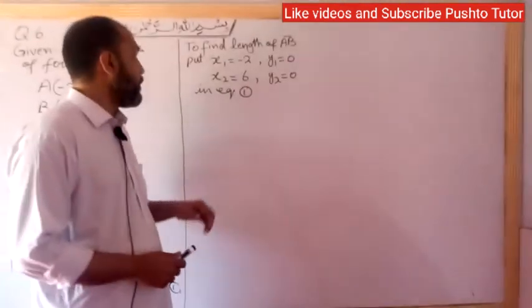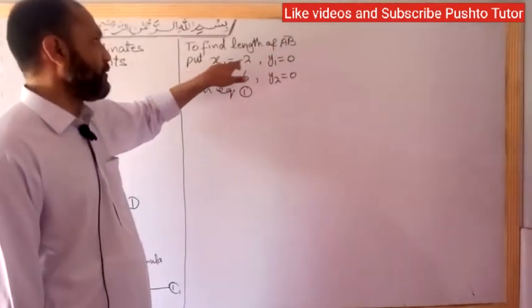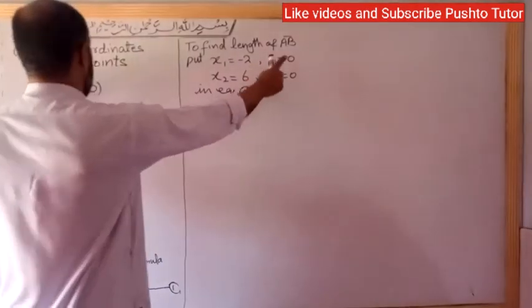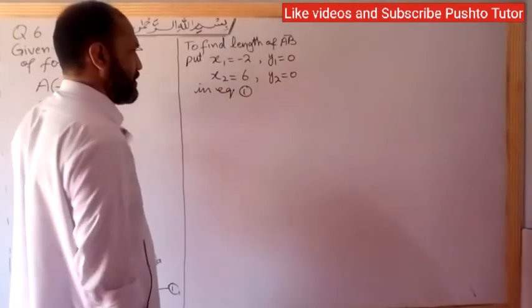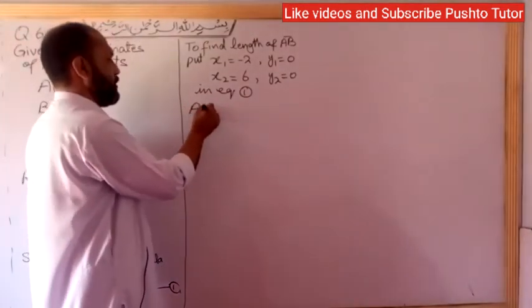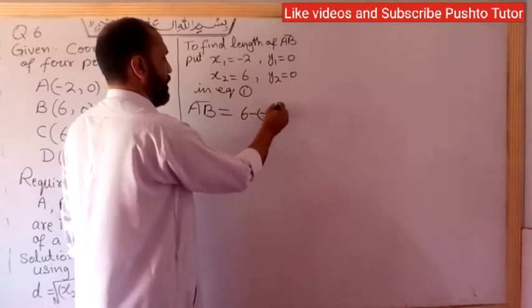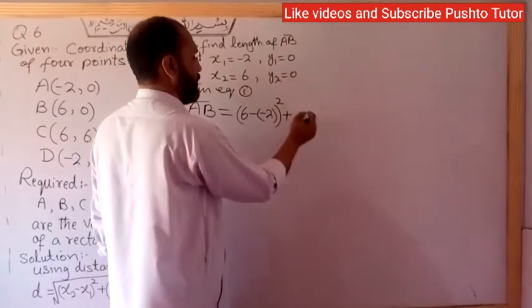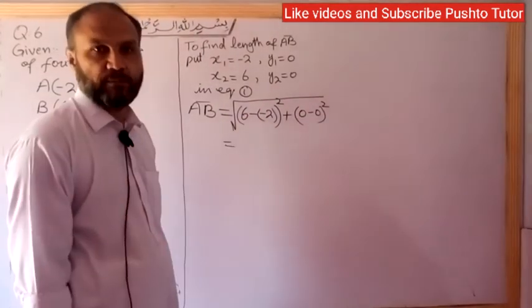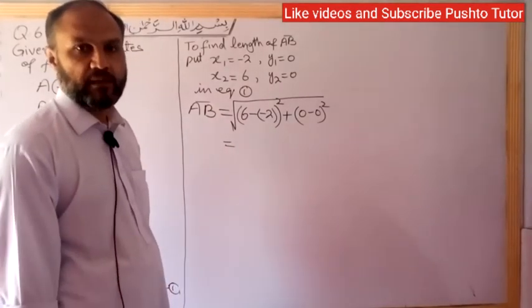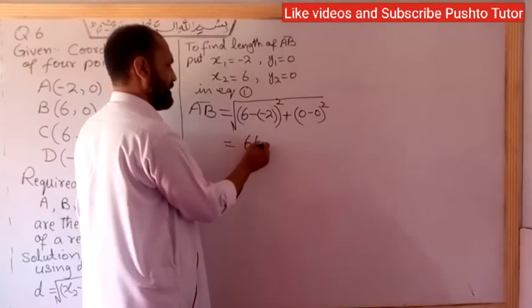To find the length of AB: x1 = -2, y1 = 0, x2 = 6, y2 = 0. AB = √((6 - (-2))² + (0 - 0)²) = √((8)² + 0) = √64 = 8.